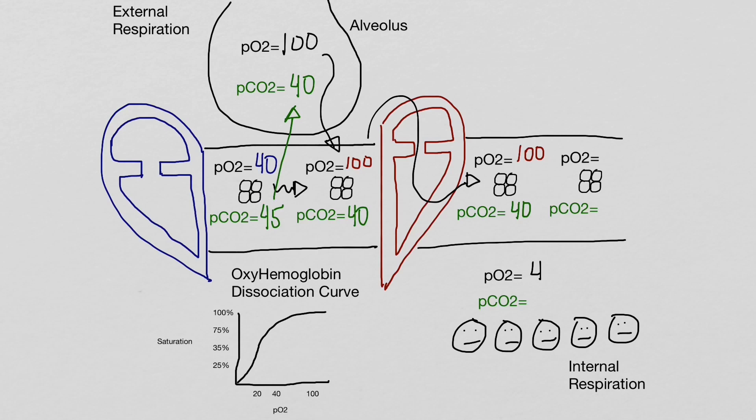The partial pressure of oxygen and carbon dioxide in the interstitial fluid around cells will be 40 and 45. At the slow flow of the capillaries, the oxygen will diffuse into the interstitial fluid, and the carbon dioxide will diffuse back into the venule end of the capillaries. This will create deoxygenated blood in the bloodstream to be pumped back to the right side of the heart and back to the lungs to continue external respiration all over again.